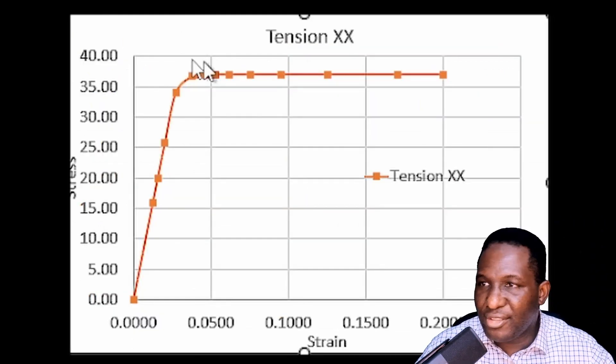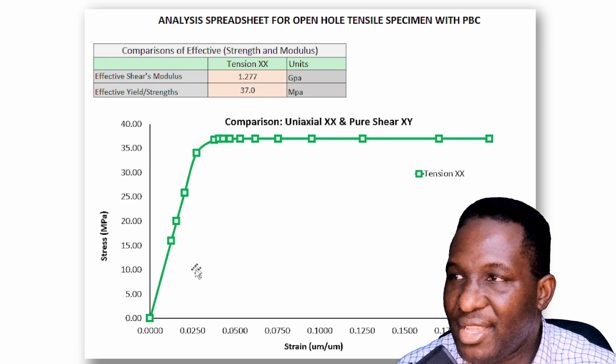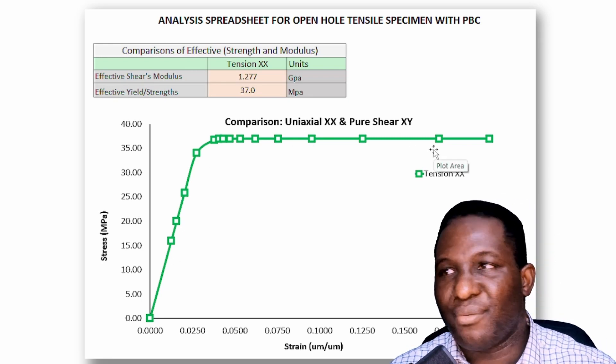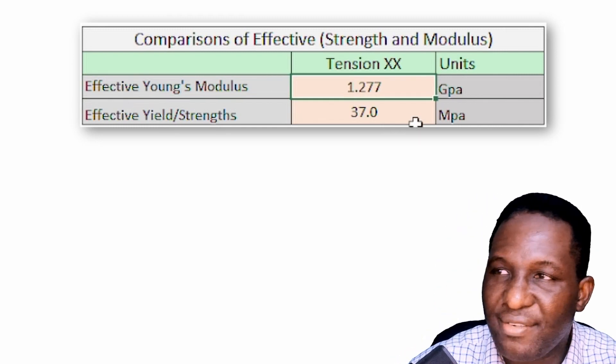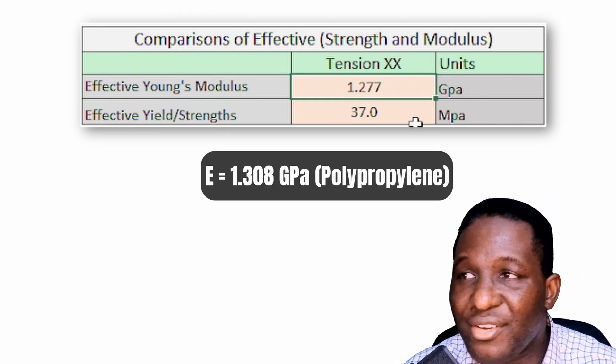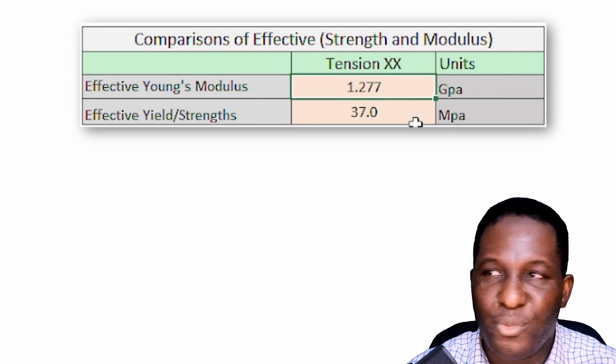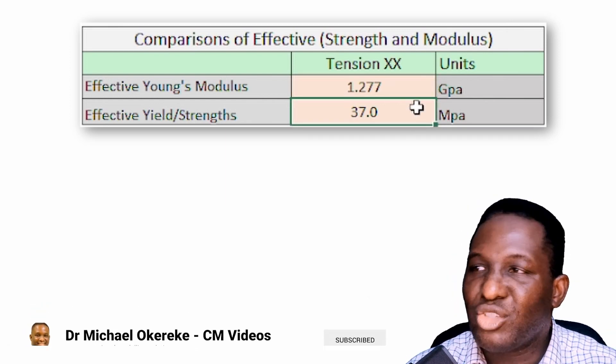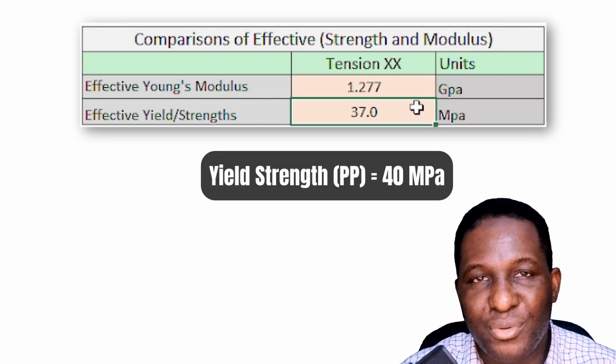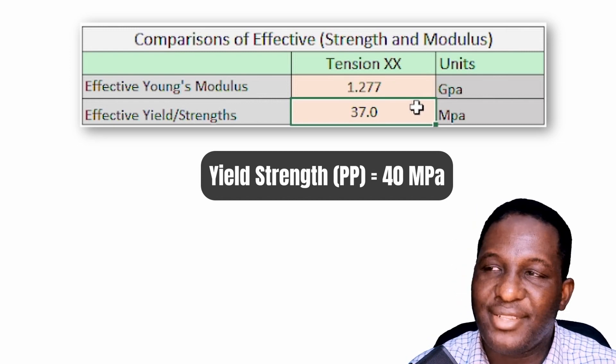The resulting stress-strain graph from the simulation gives a Young's modulus of approximately 1.203 GPa. Recall we input 1.308 GPa — the presence of the hole reduces the effective stiffness. The yield strength input was 40 MPa but is reduced slightly to about 37 MPa due to the open hole. If you want to learn more about applying PBC manually, or more about the pbcgen2d code, links to those videos are available. Thank you for watching, see you in the next one.